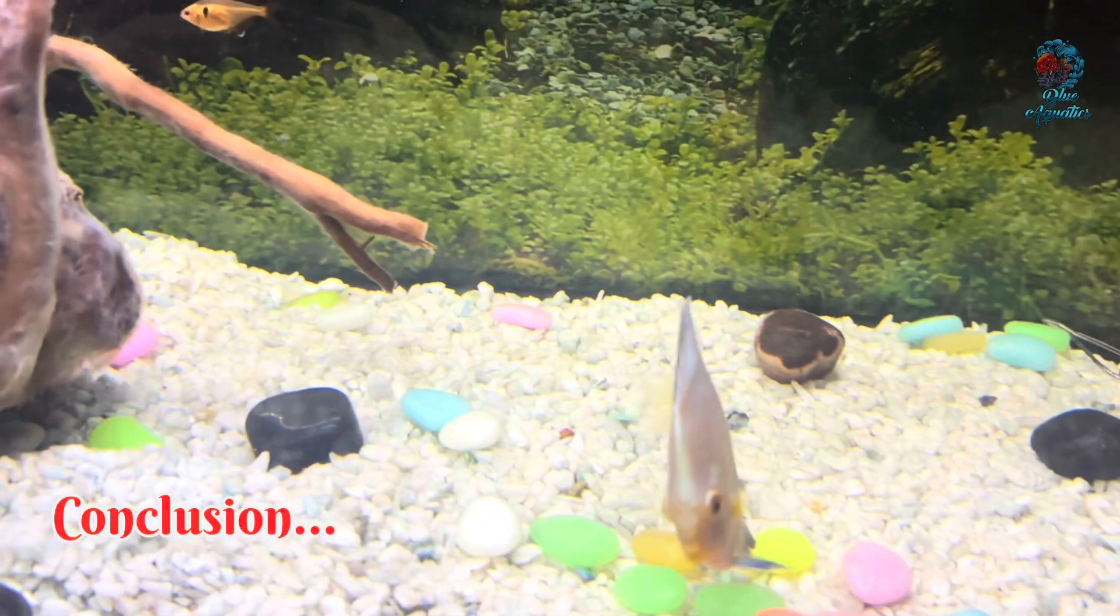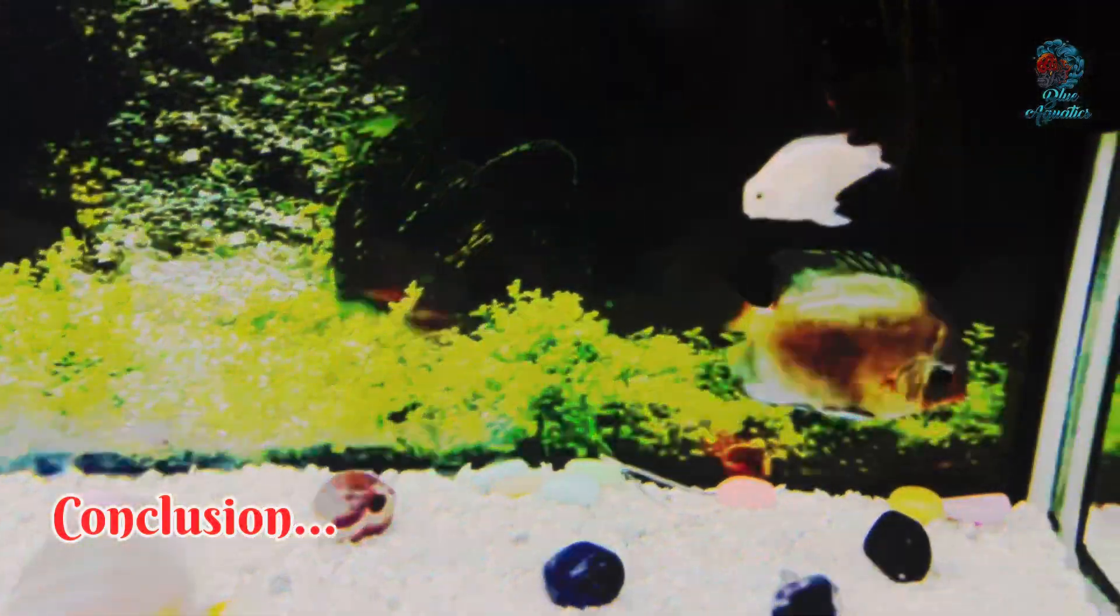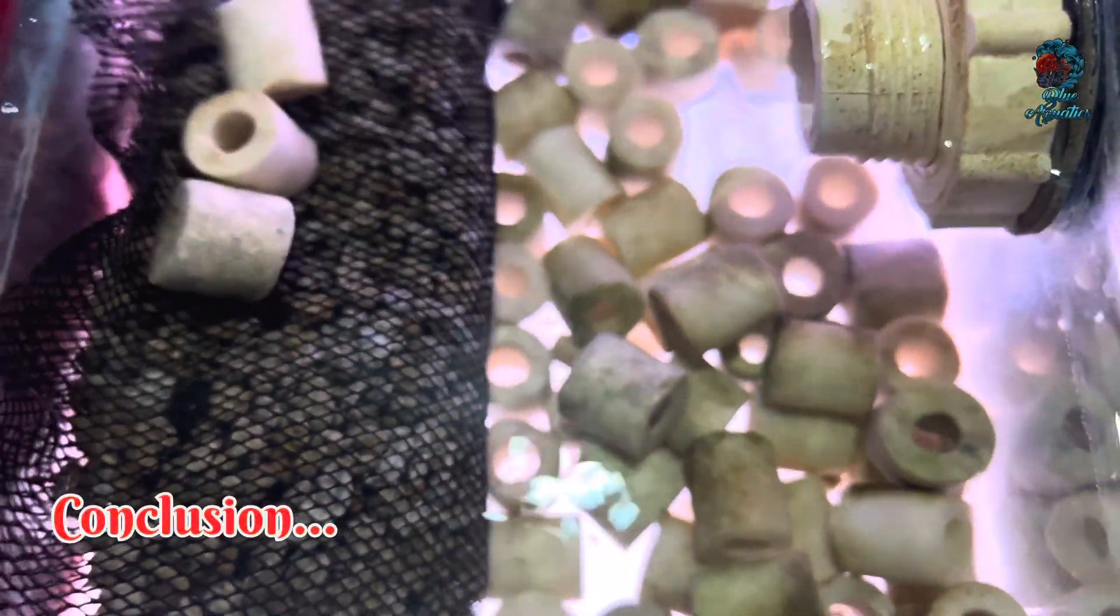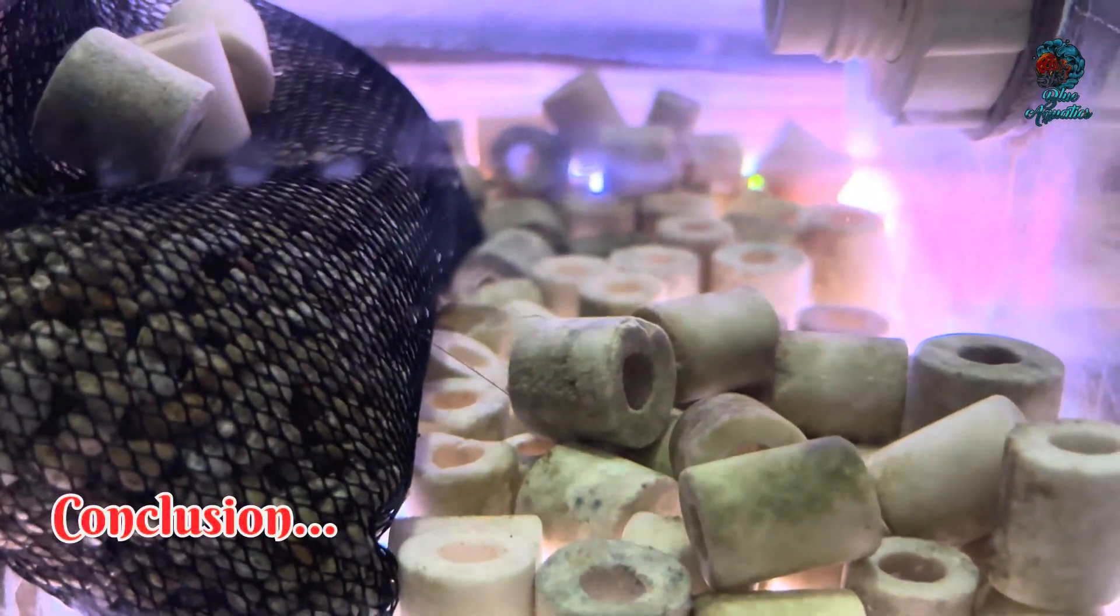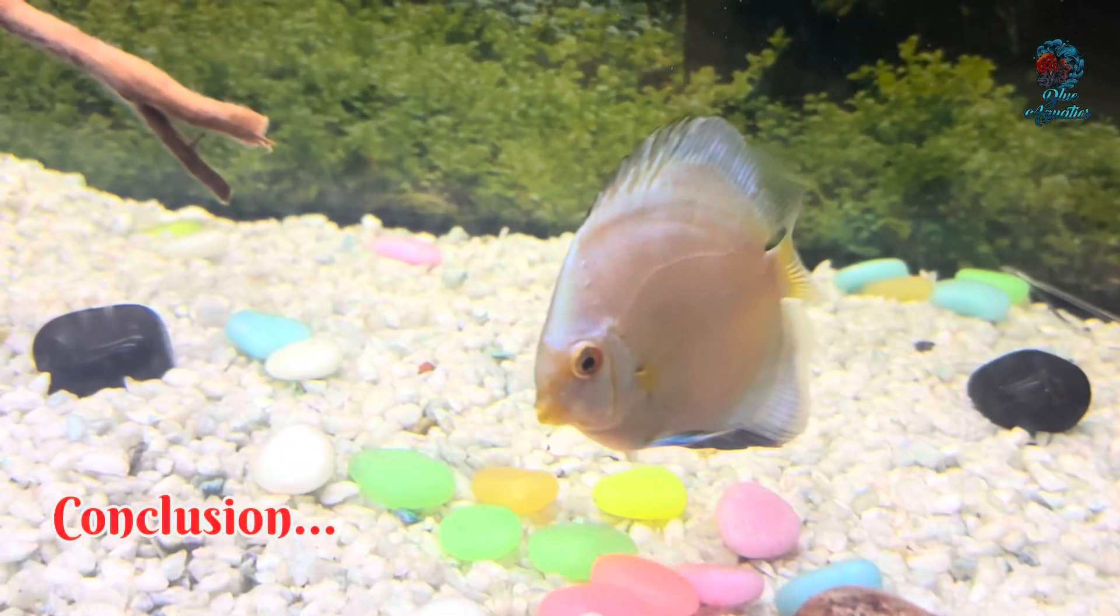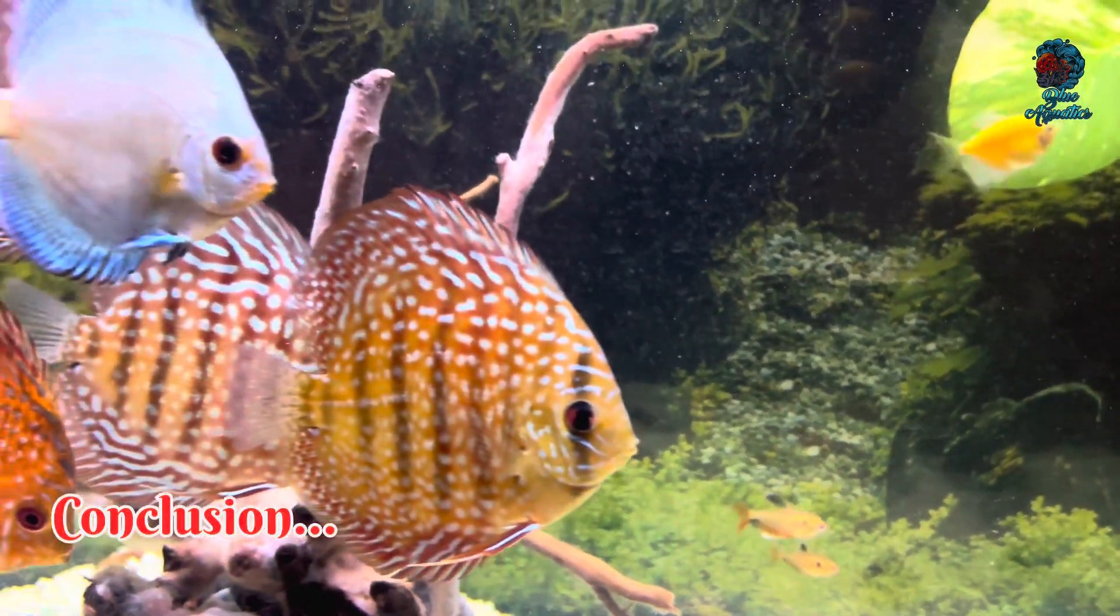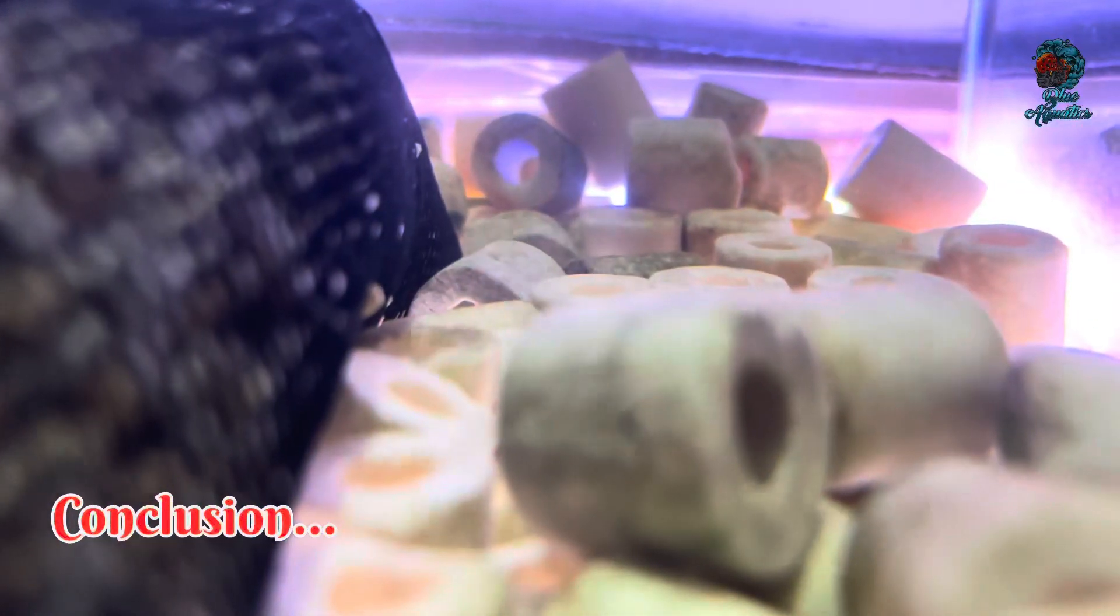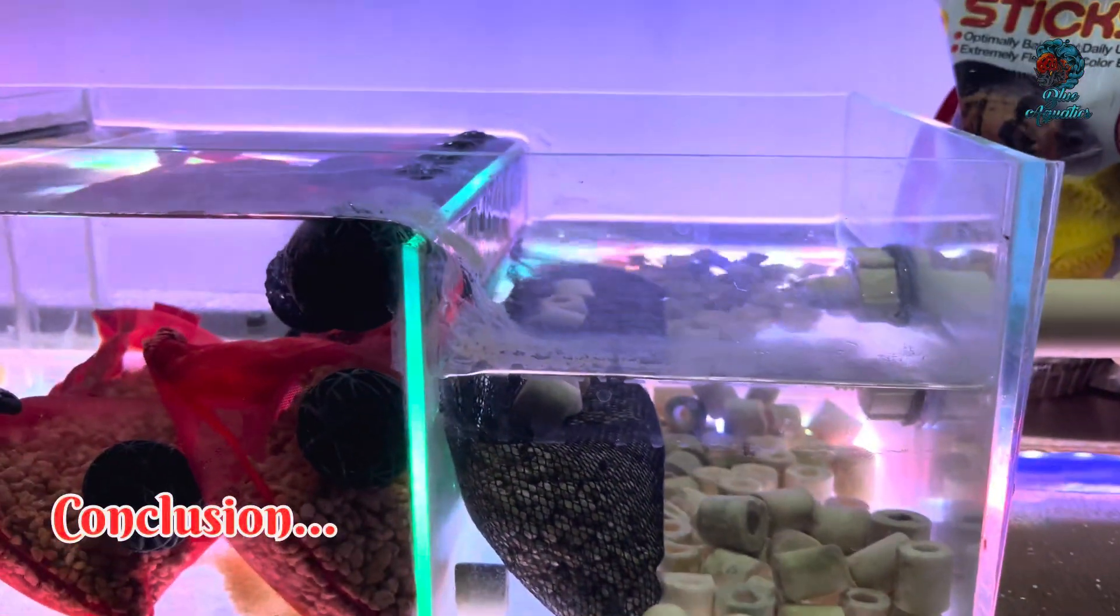Conclusion. To summarize, beneficial bacteria are essential for maintaining a healthy aquarium environment. Ceramic rings are superior for bacterial colonization due to their high surface area and porosity, making them an excellent choice for biological filtration. Tank stones, while aesthetically pleasing, do not offer the same level of efficiency for bacterial growth. Investing in proper biological media like ceramic rings will ensure the health and well-being of your fish.